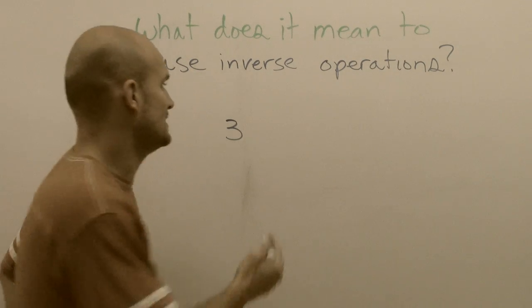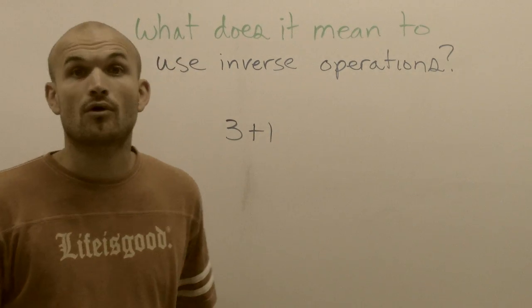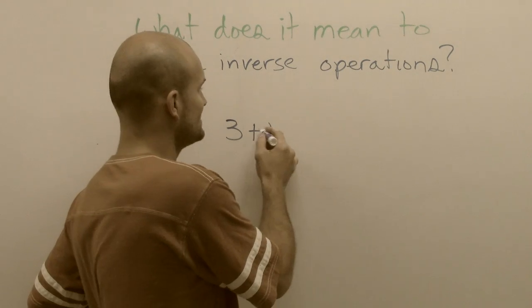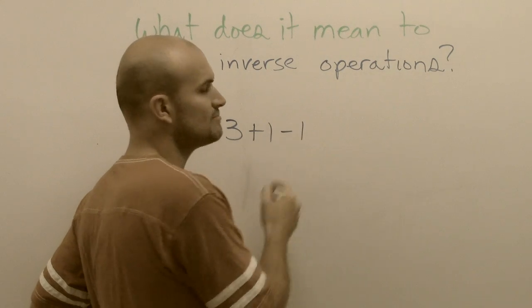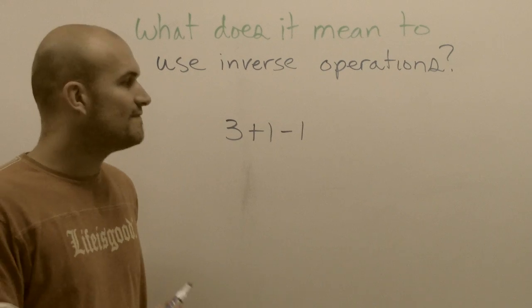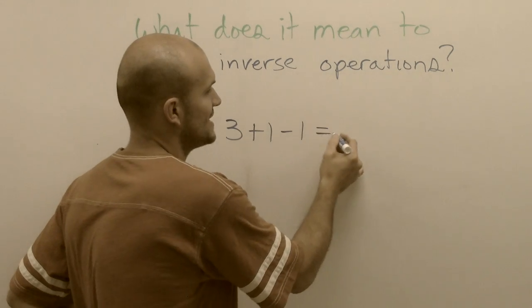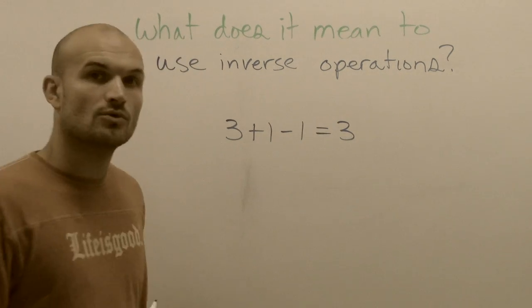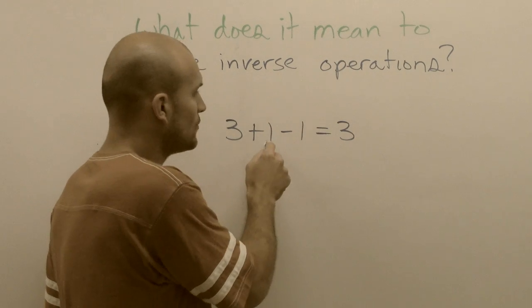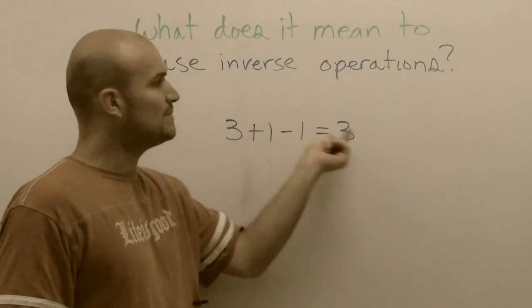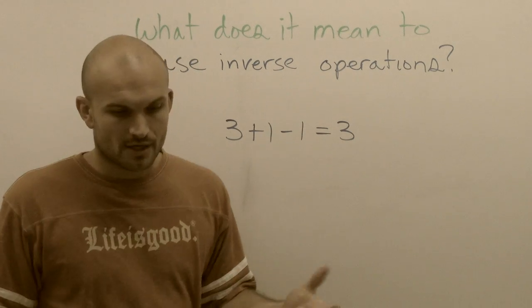If I take three and now I add one to it, I get four, right? But now if I add three and then I subtract one again, my final value you could say is now equal to three. So what happened was I added one and then I subtracted one, got me back to my original value.